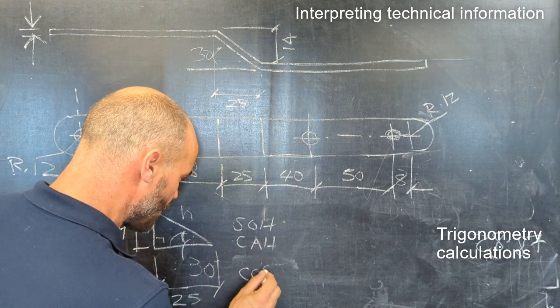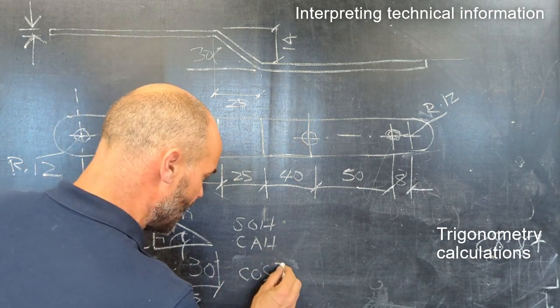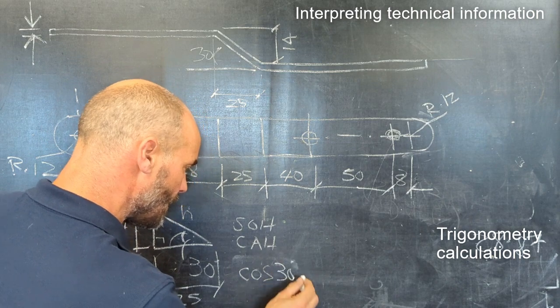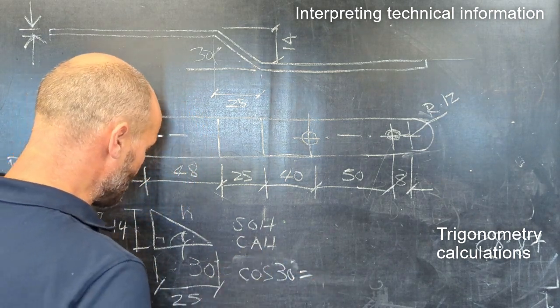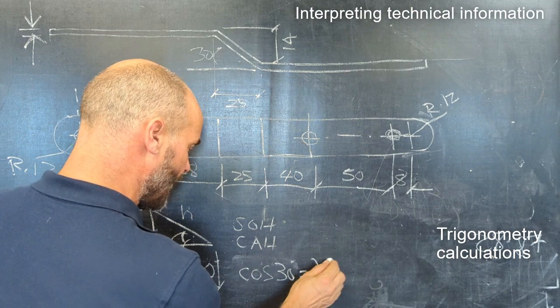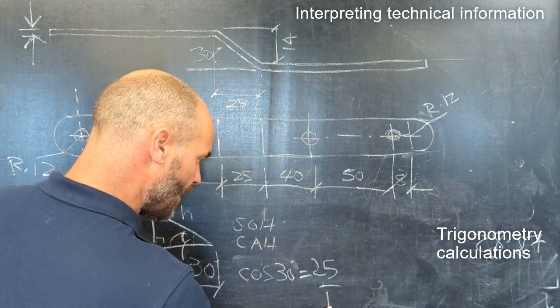Cos 30 equals the adjacent divided by the hypotenuse, so 25 over the hypotenuse.